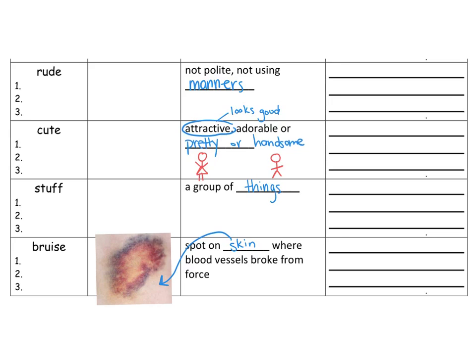You can write about bruises, for example: 'Aaron gave me a bruise when he hit me at recess,' or 'I saw a guy get a black eye, and it left a huge bruise.'